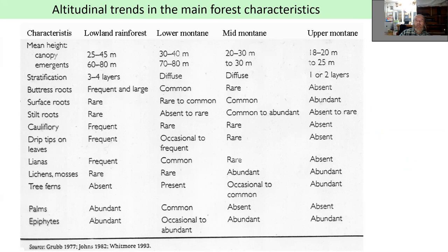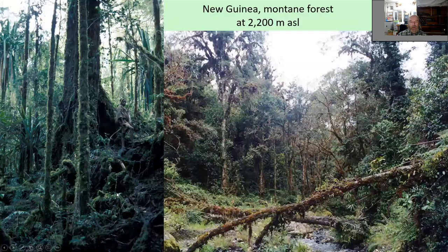Generally with altitude trends in the forest, it's not only C3/C4 grasses - there are other trends. Mean tree height is decreasing at high elevation and stratification becomes simple. Stilt roots are disappearing, the cauliflory floor is disappearing, lianas are disappearing. On the other hand, epiphytes, lichens, and mosses are increasing. The mountain forests look very different from the lowlands - these are examples from New Guinea at 2,200 meters.